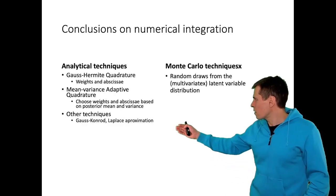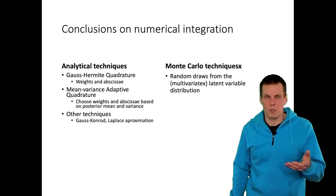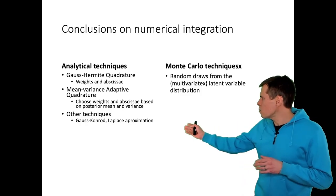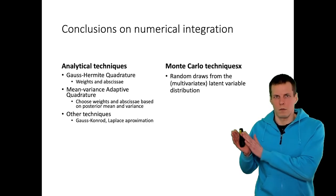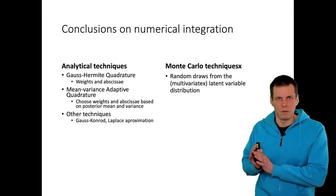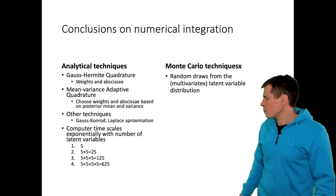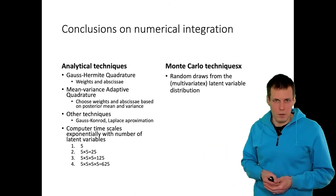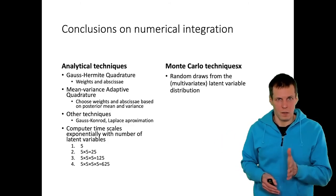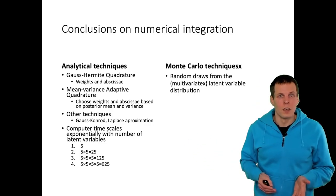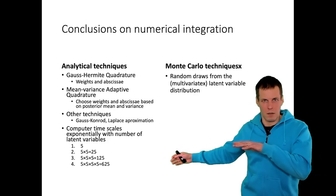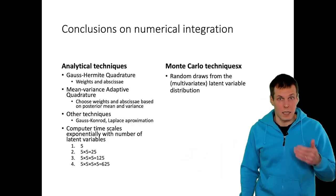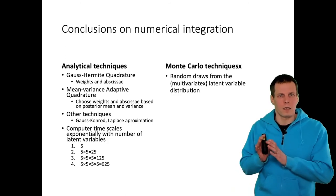One interesting alternative is the Laplace approximation, which is not really an integration technique but an approximation of the integral — using only one integration point, making calculation a lot faster. This becomes a real issue with high-dimensional integrals: with one latent variable and five integration points you have 5 points; with two latent variables you have 25; with three you have 125; with four you have 625. The number of integration points explodes quickly with complex models.